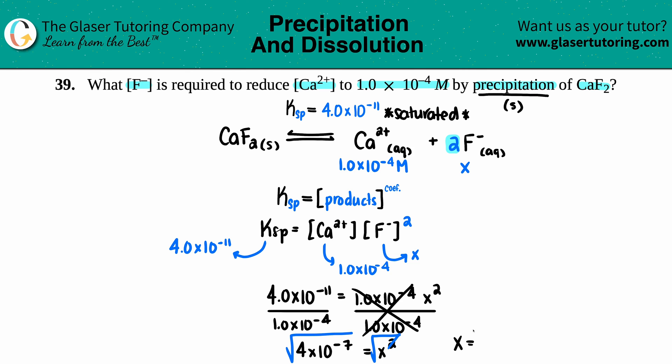And we get 6.3 × 10^-4, and that's molarity, and then they match: x and x. So what was the fluoride ion concentration? The F-, since it was just x, it is 6.3 × 10^-4 M, and that is the answer.